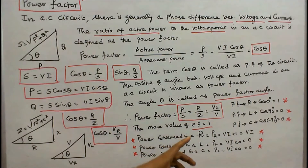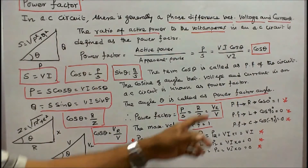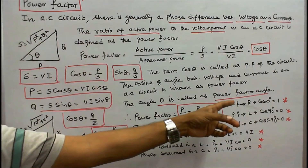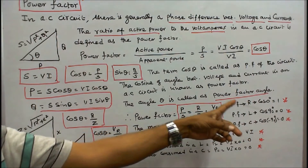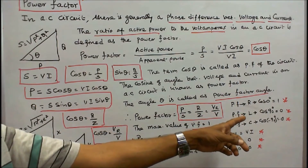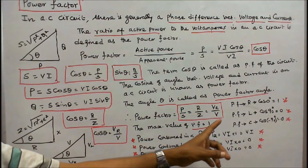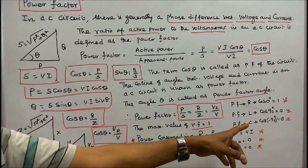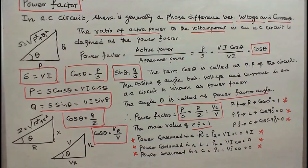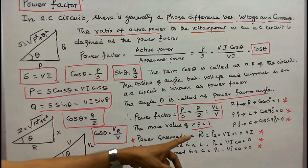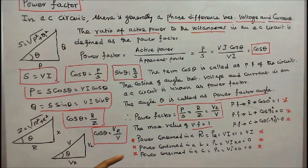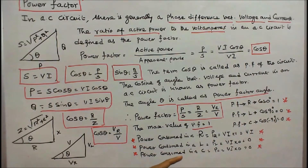The maximum value of power factor equals 1. For a purely resistive circuit, cos 0° equals 1. For a purely inductive circuit, cos 90° equals 0. For a purely capacitive circuit, cos(-90°) equals 0. Power consumed in a purely resistive circuit is V·I·1 equals V·I. Power consumed in a purely inductive circuit is V·I·0 equals 0. Power consumed in a purely capacitive circuit is also V·I·0 equals 0.